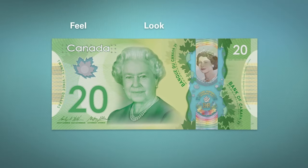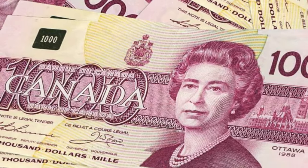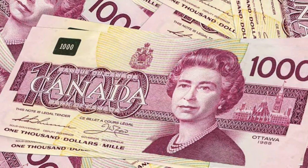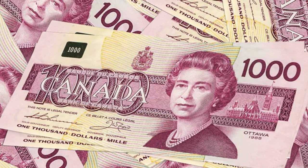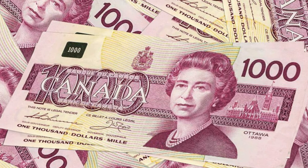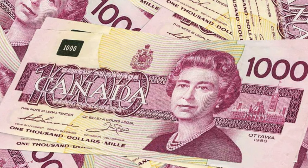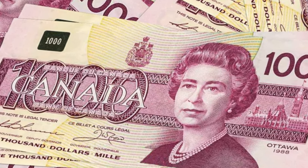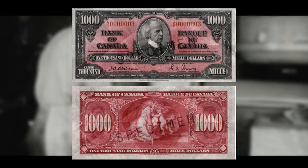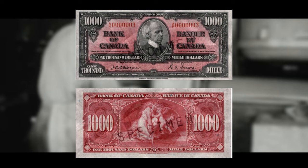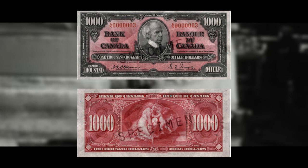The Canadian $1,000 bill was initially designed to facilitate cash transactions between businesses and banks. It was commonly used by corporations, wealthy individuals, and high-value clients for transactions involving large amounts of money. It was also extremely popular in the black market and for other illegal transactions, as it allowed individuals to conduct large transactions without leaving a paper trail and transport large quantities of money more easily. In the 1950s, the Bank of Canada began tightening regulations on the use of $1,000 bills to try and reduce their use in illegal transactions.